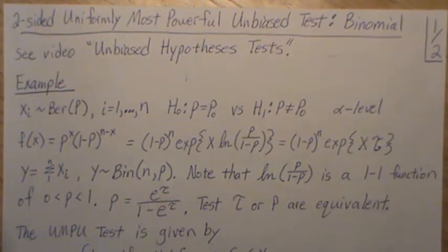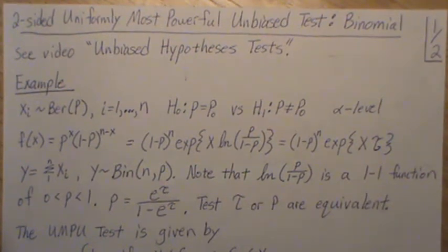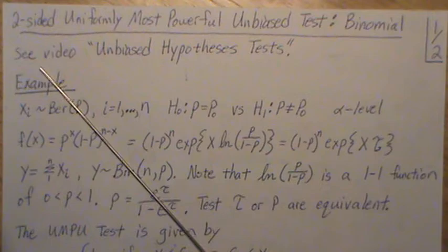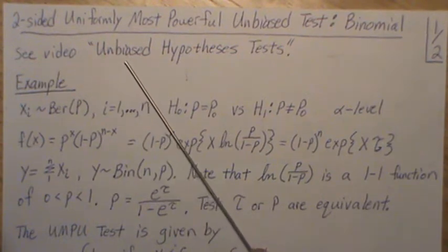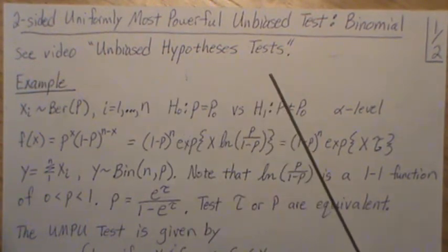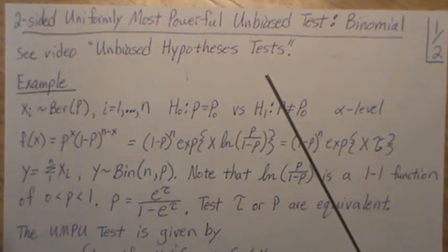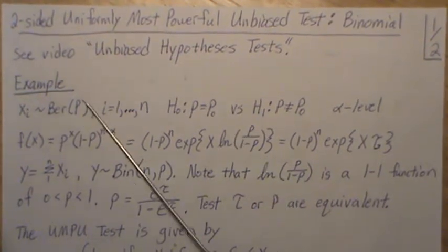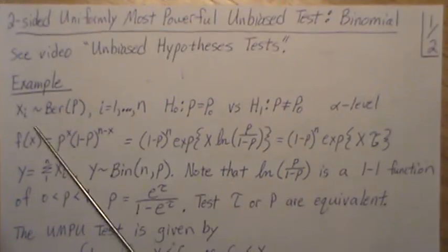Hello, this next video in a playlist that I'm calling hypothesis testing. We're in an unbiased testing phase here. We're going to look at a two-sided uniformly most powerful unbiased test in the binomial setting. I suggest that you go back a video and watch the unbiased hypothesis test. There we talk about the theorem that we use and do an example in the normal setting, but here we're going to be in the binomial setting.